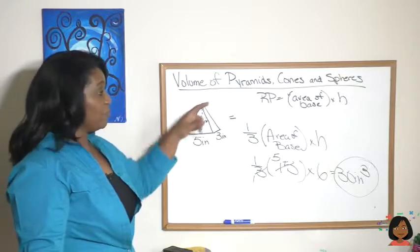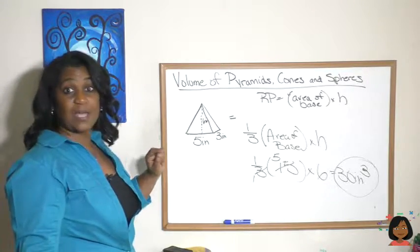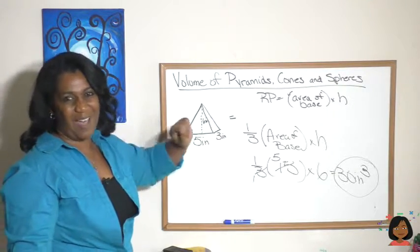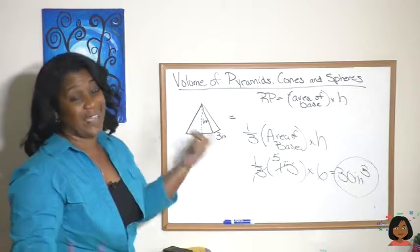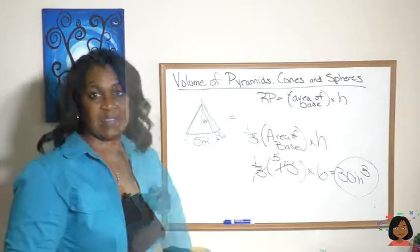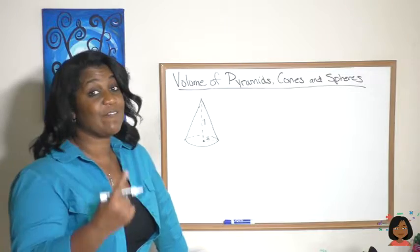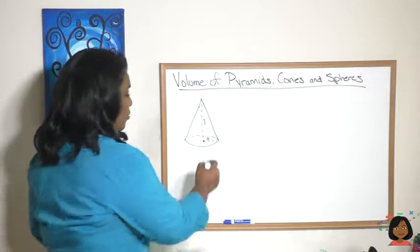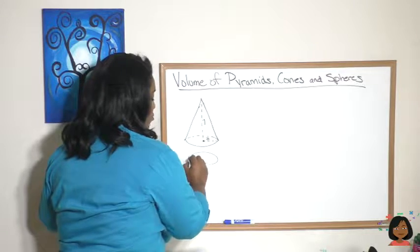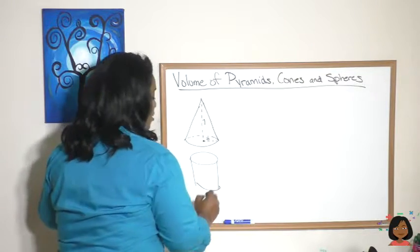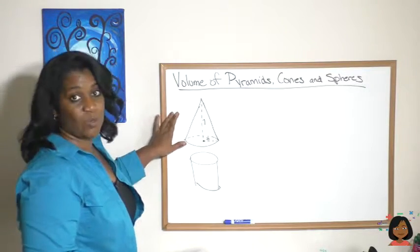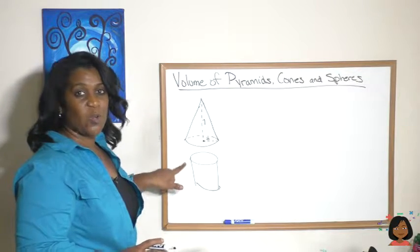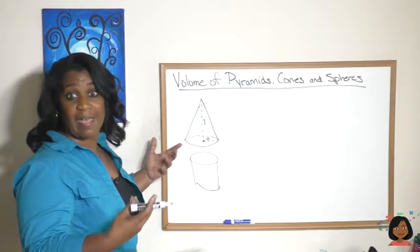So as long as you can remember that a rectangular prism and a pyramid have a relationship, the volume is one-third area of the base times the height. Take a look here, we have a cone. Guess what? A cone and a cylinder have a relationship when it comes to volume. It turns out that a cone is one-third the volume of a cylinder with the same area and height.